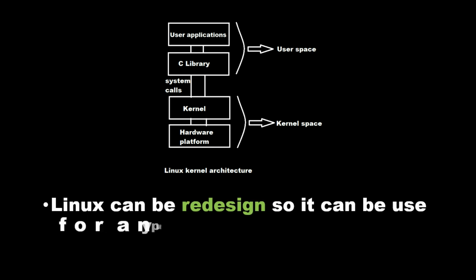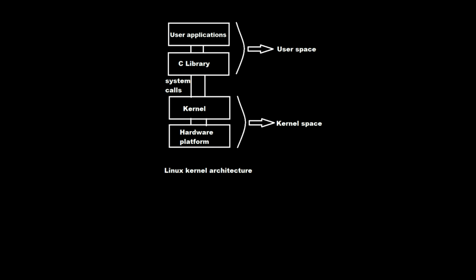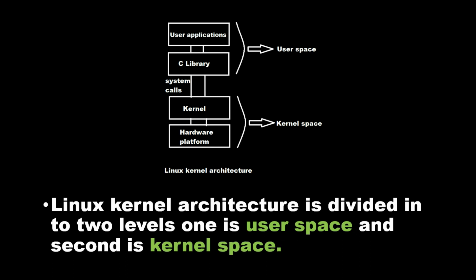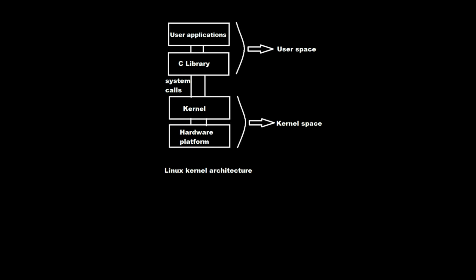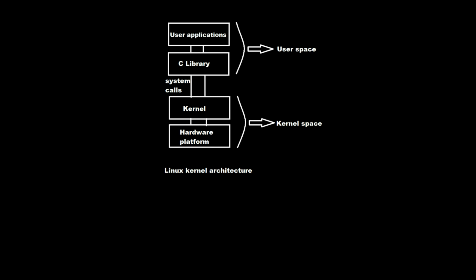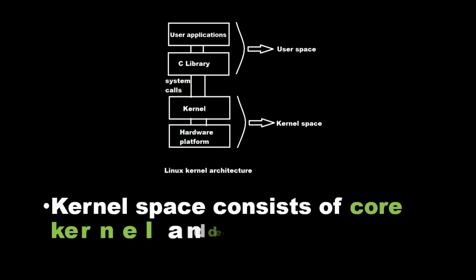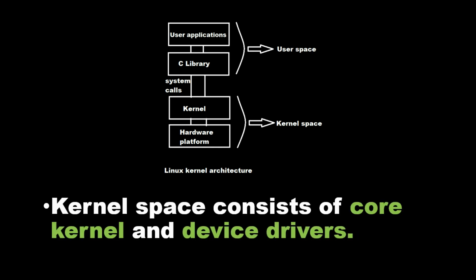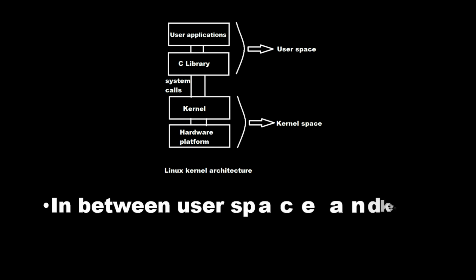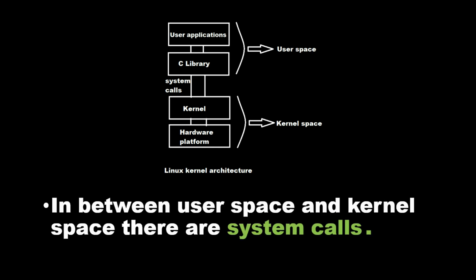Linux can be redesigned, so it can be used for any purpose. Linux kernel architecture is divided into two levels: user space and kernel space. User space consists of user applications and C library. Kernel space consists of the core kernel and device drivers. In between user space and kernel space, there are system calls.